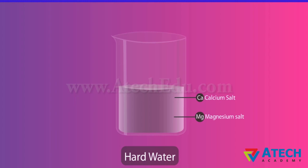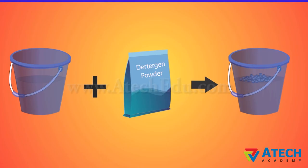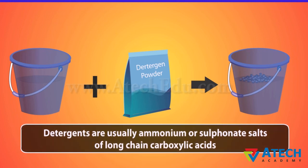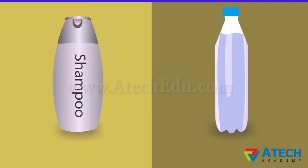This problem is overcome by using another class of compounds called detergents as cleansing agents. Detergents are usually ammonium or sulfonate salts of long chain carboxylic acids. The charged ends of these compounds do not form insoluble precipitate with the calcium and magnesium ions in hard water. Hence, they remain effective in hard water. Detergents are usually used to make shampoos and products for cleaning clothes.